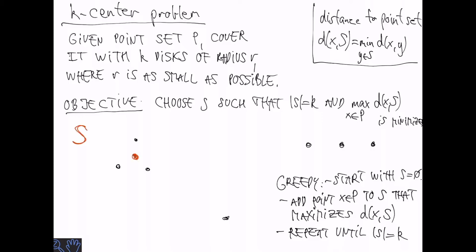So in the example, initially all the distances are infinity, so we can start with any point. So let's choose the one shown here in red. The next one we choose is the one furthest away from the point in red. And finally,